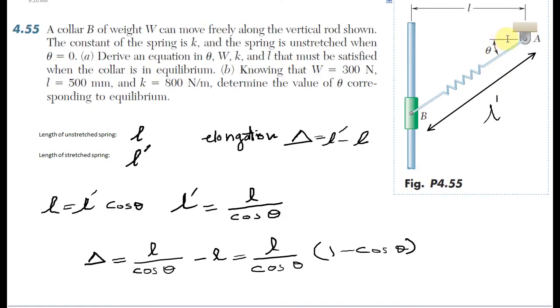First, I assume the unstretched length of the spring is L and the stretched length is L prime. The elongation is the final length minus the initial length, which is L prime minus L, and I called it Delta.